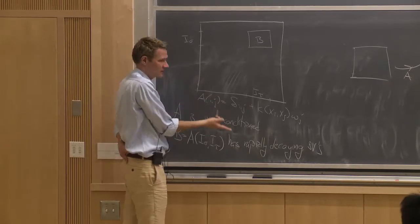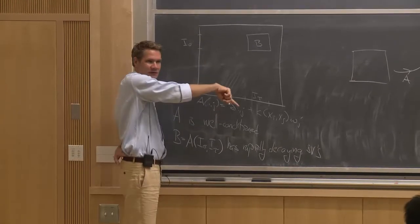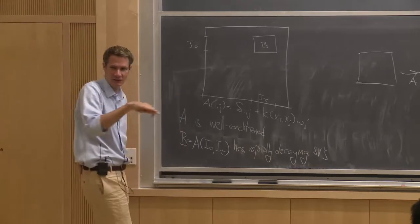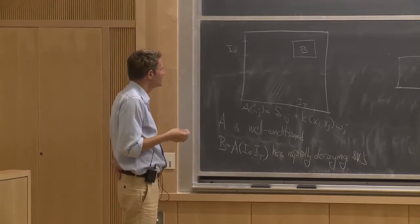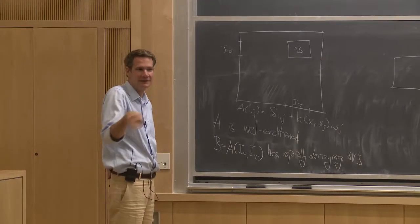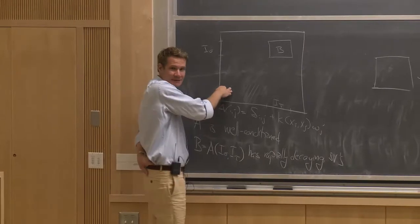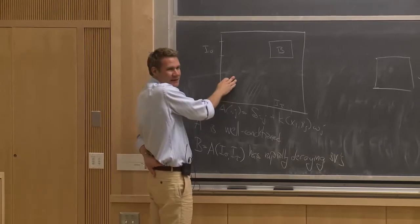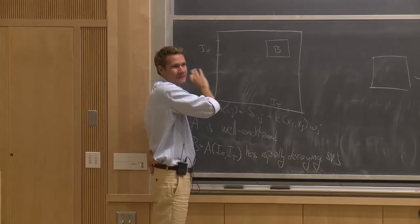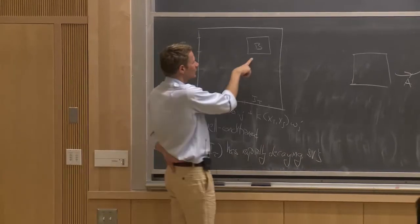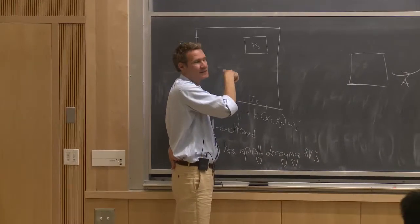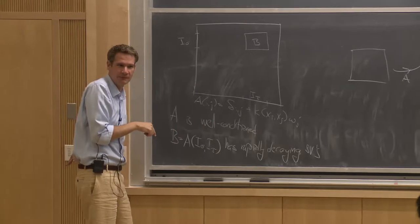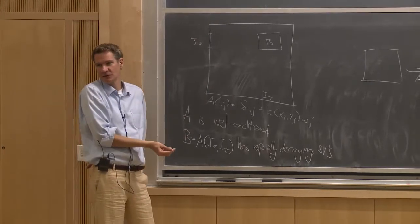That's different from the matrices you get when you discretize a boundary integral equation. A here as a discretization of a boundary integral equation should not have rapidly decaying singular values — ideally more or less constant singular values, or with mild decay for a single-layer operator. This matrix's objective is for us to invert later, so you don't use the ID directly on the whole thing.